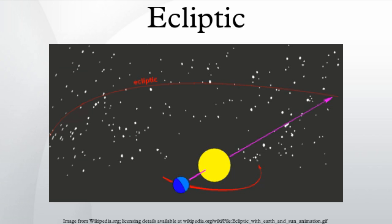The ecliptic is actually the apparent path of the Sun throughout the course of a year. As the Earth takes one year to make a complete revolution around the Sun, the apparent position of the Sun also takes the same length of time to make a complete circuit of the ecliptic.